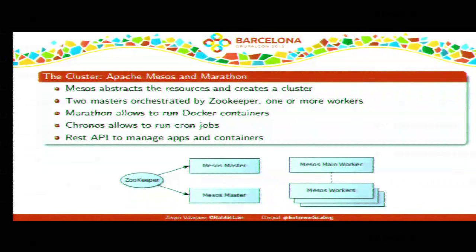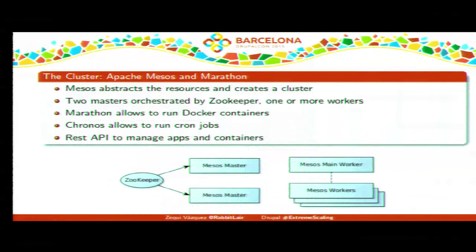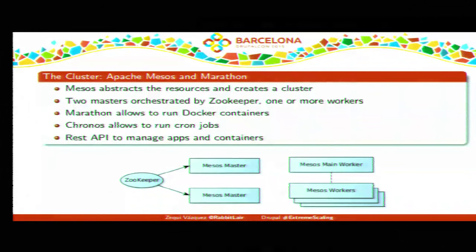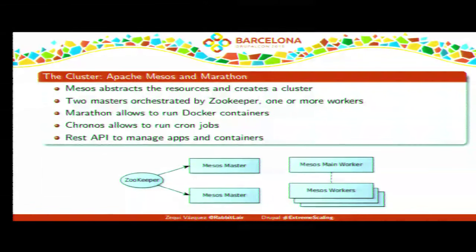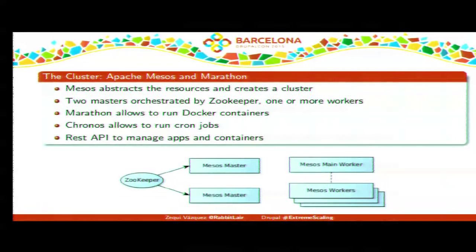ZooKeeper orchestrates the two Mesos masters, with one primary worker and a group of autoscaling workers. An important feature: Marathon and Chronos expose a REST API. To launch a new Docker container or set up a cron job, you just send an HTTP request to that API and it's done. We'll see an example in the demo.